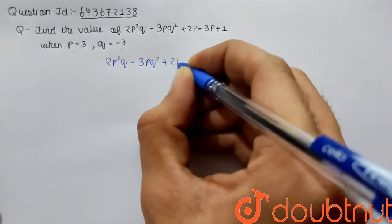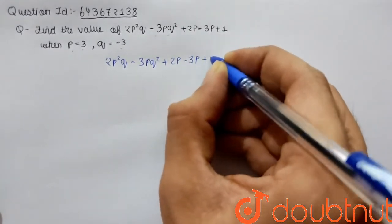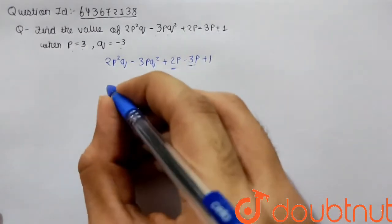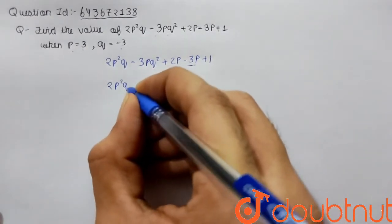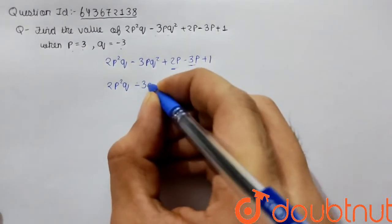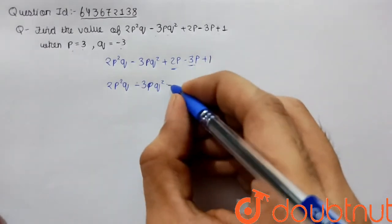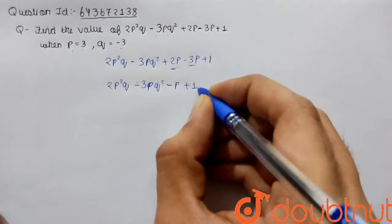Now let's solve this. These terms can be subtracted, so 2p²q - 3pq² plus (2 - 3) is -1p + 1, which simplifies to 2p²q - 3pq² - p + 1.